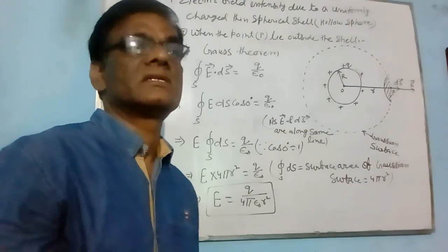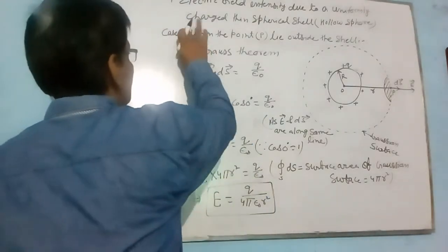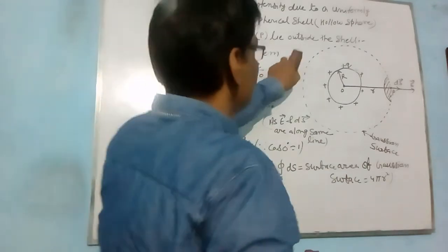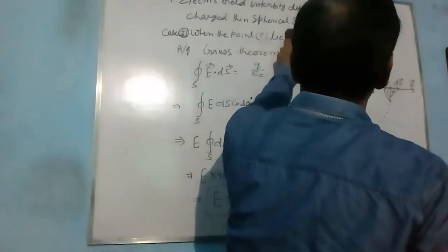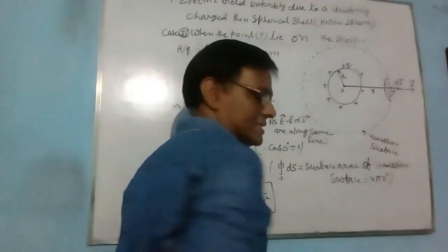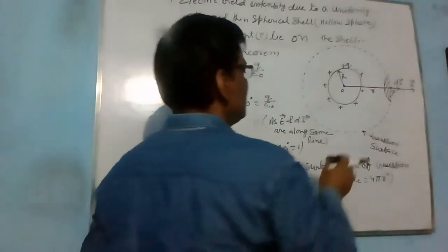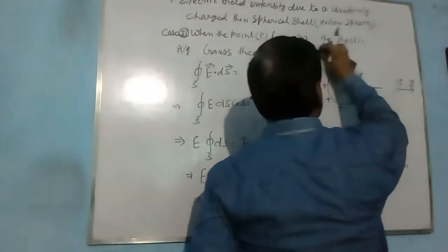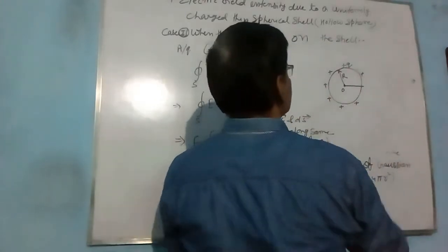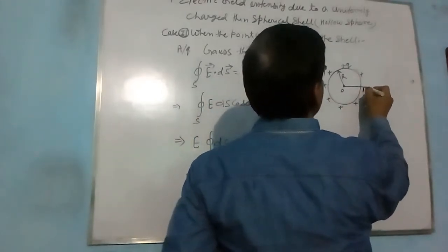Now, we discuss case 2 where the point P lies on the shell. The point P lies on the shell. Look here. In this case, the point P becomes here.